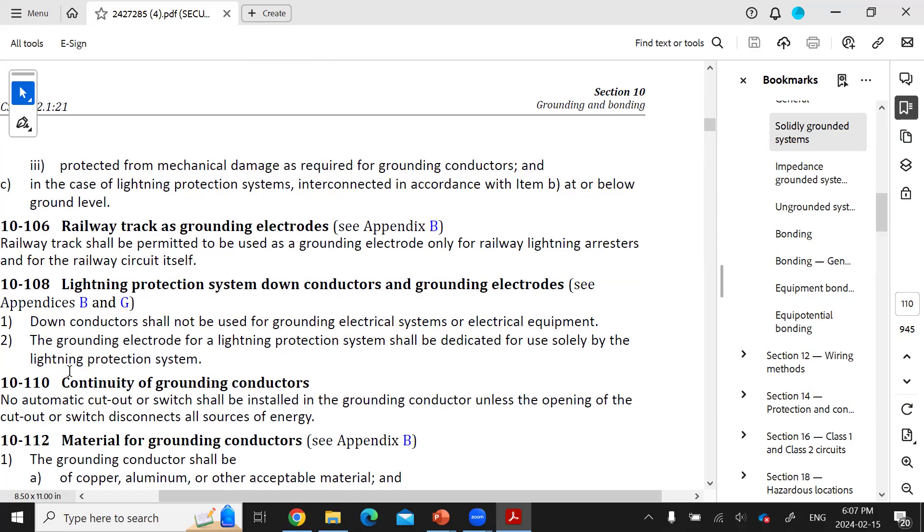The interconnection conductor between the two of them is to be protected from mechanical damage as well. So that means let's make sure that that is a buried conductor that's going to go from one electrode to the other electrode. Let's install it below grade for it to not be damaged.